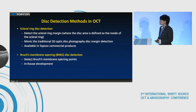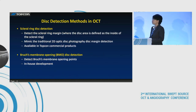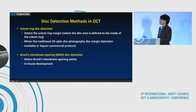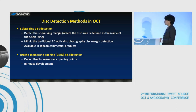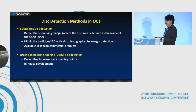To begin with, I want to briefly introduce the disk detection methods in OCT. The first one is scleral ring disk detection. It is to detect the scleral ring margin, where the disk area is defined as the inside of the scleral ring. This method was originally developed to mimic the traditional 2D optic disk photography disk margin detection. It is widely available in Topcom commercial OCT products like Trident, Maestro, Atlantis, et cetera.